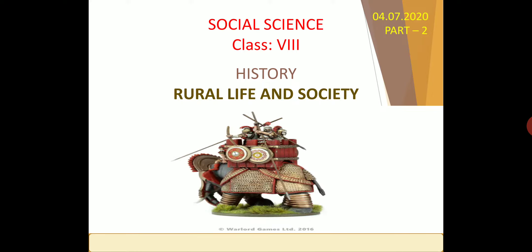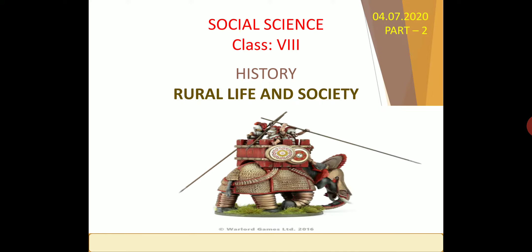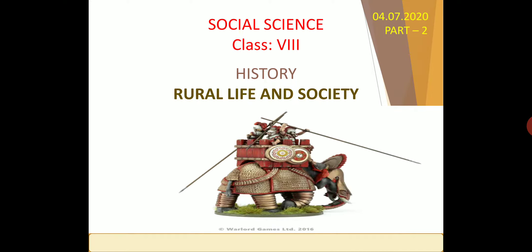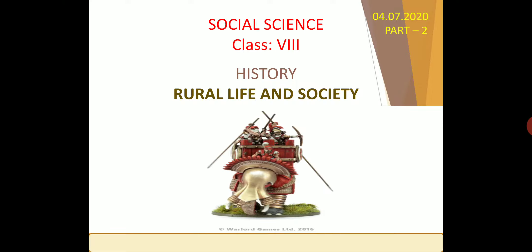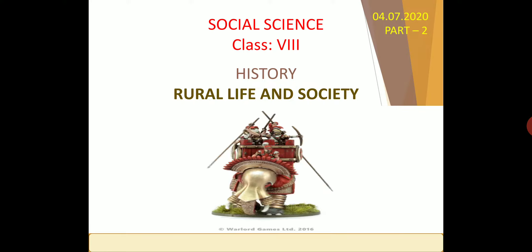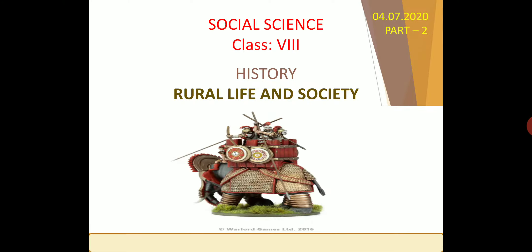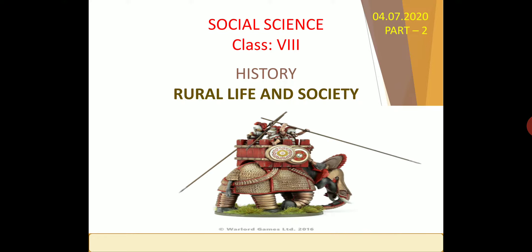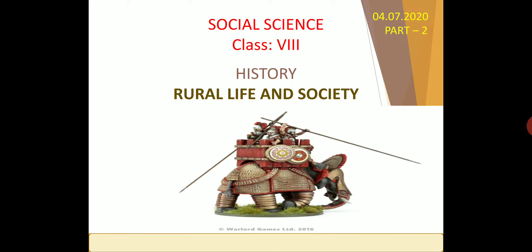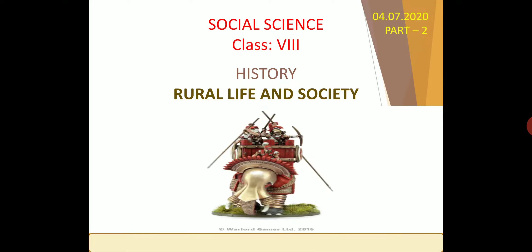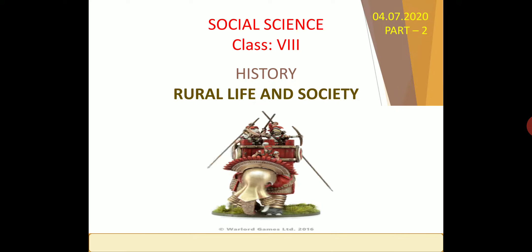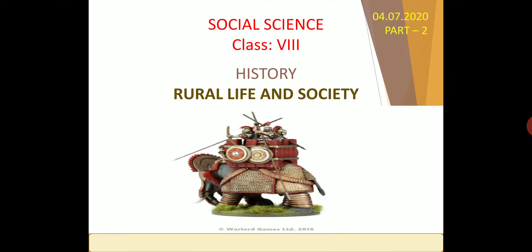The Permanent Settlement is a 10-year system dealing with the government, Zamindars, and Ryots. Ryots had to deal with the Zamindar, who then conducted dealings with the government. In the Raithwari system, the government dealt directly with the Ryots — the farmers.